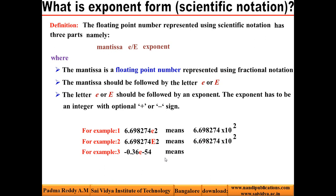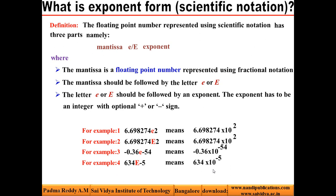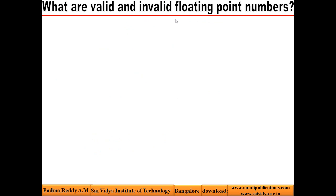Another example: -0.36 E-54 means -0.36 × 10⁻⁵⁴. A fourth example: 634 E-5 means 634 × 10⁻⁵. Now we know what is exponent form, also called scientific form.